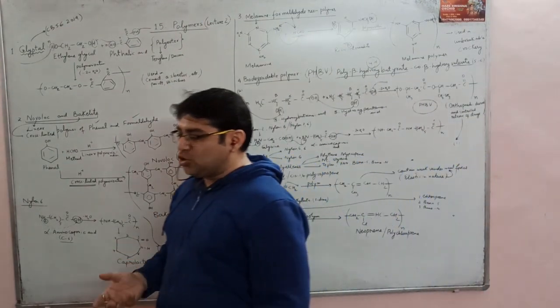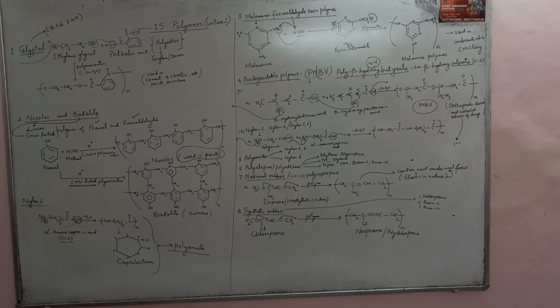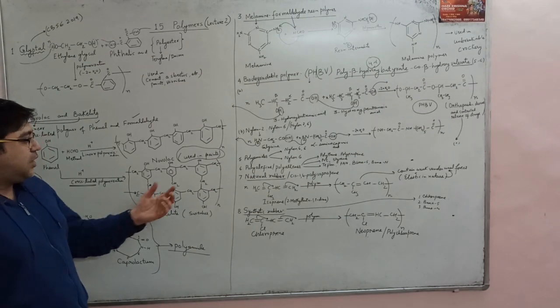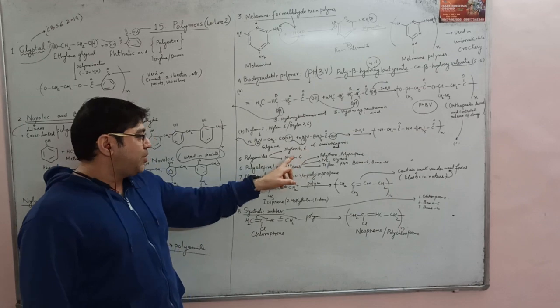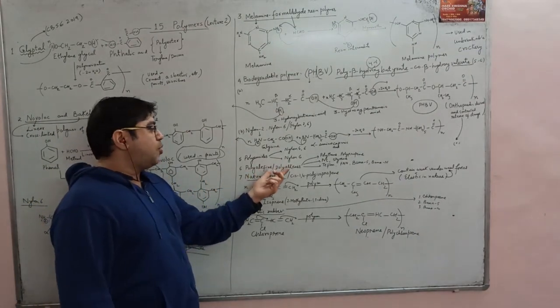These two biodegradable polymers are decomposed by microorganisms. PHBV is a polyester (carboxylic acid condensed with OH), while nylon 2,6 is a polyamide (carboxylic acid condensed with amine). We have already discussed polyamide examples: nylon 6,6 and nylon 6 in lecture one. The next type is polyolefins or polyalkenes.